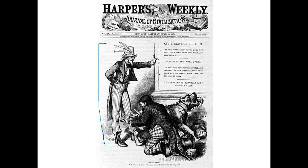Here we have some commentary with Uncle Sam looking on, pondering a cover of Harper's Weekly about the need for civil service reform. The image argues that a hungry dog will steal — if you want a good watchdog, you need to pay a good price for him; if you starve him, of course he's going to steal food. So cutting his tail off as punishment doesn't resolve the issue. The clear message is that people will steal if they need to eat, so you need to resolve the underlying problem rather than simply punish people for doing what they need to do to survive.